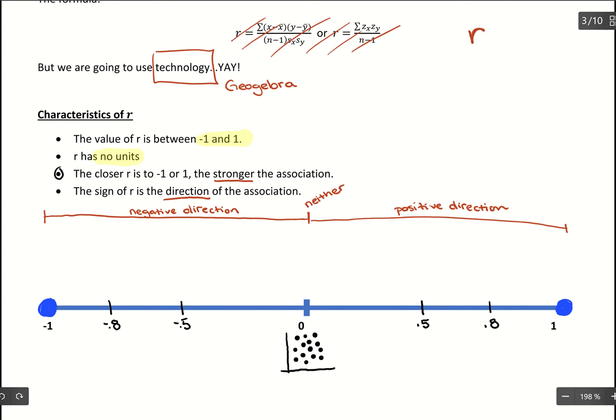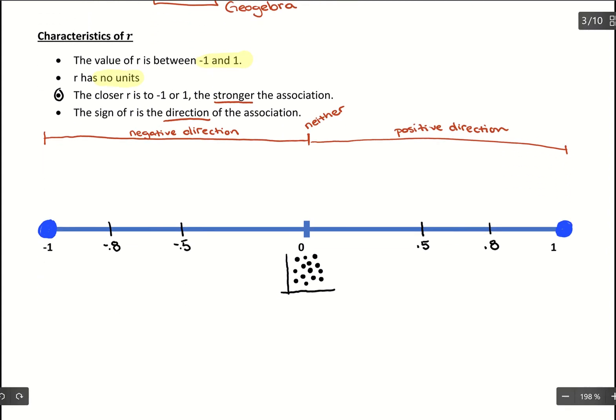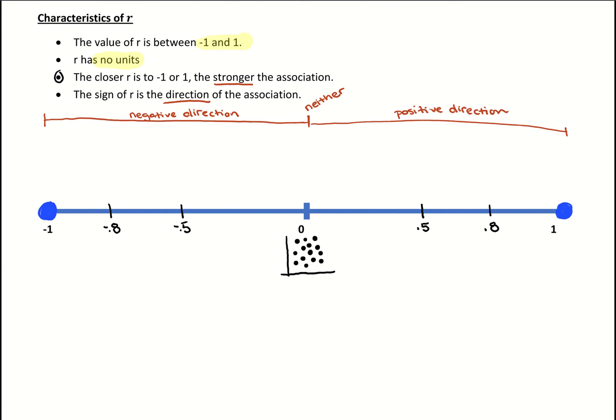That's the change in our strength. It says the closer r is to negative 1 or 1, the stronger the association. If we get r equals positive 1, that's the strongest association we could have, the strongest positive association. When we make that graph, it would be linear and perfectly linear. If we graphed our data, it would be increasing because it's positive, and our data would form a perfect line. If we found that line of best fit, all the data would fit.